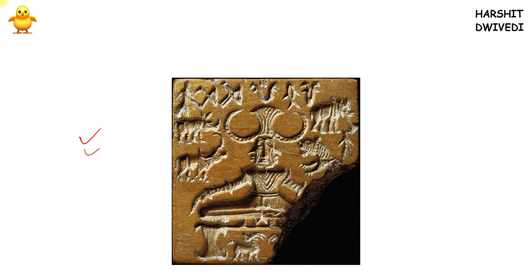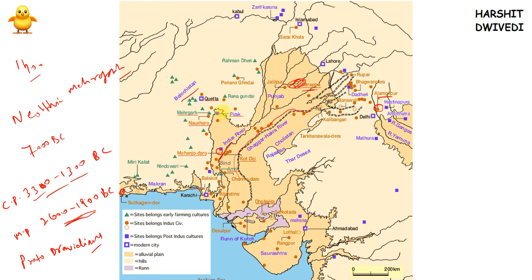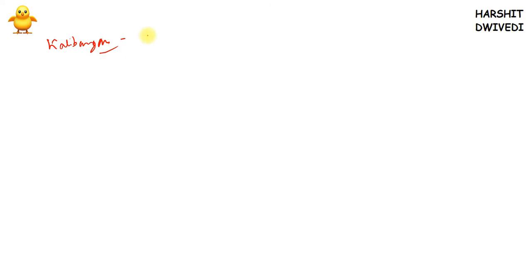The next important site is Kalibangan, present in the Hanumangarh district of Rajasthan. It is located on the banks of the Saraswati River.